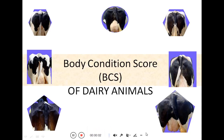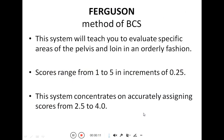Today our topic is body condition scoring of dairy animals. The method we are going to use is the Ferguson method of body condition scoring. This system teaches you to evaluate specific areas of the pelvis and the loin in an orderly fashion. The score ranges from one to five in increments of 0.25.